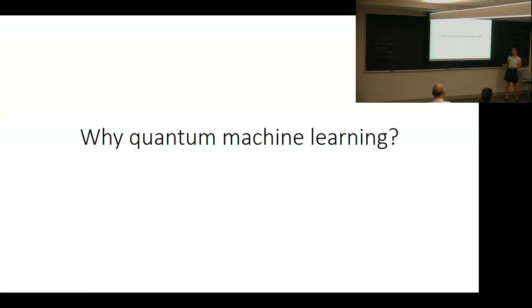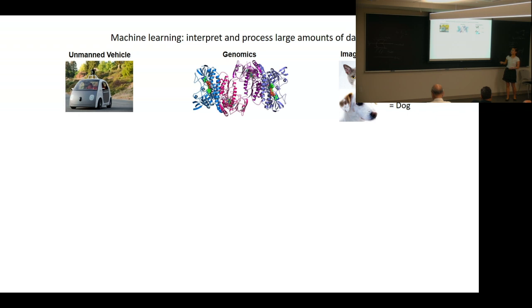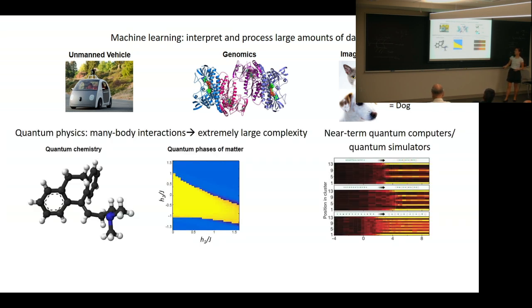Let me first begin by motivating quantum machine learning and talking about what kind we're doing. Machine learning is a method to interpret and process large amounts of data. It's been very successful for things like self-driving cars, genomics, and drug discovery.